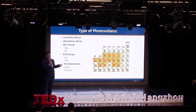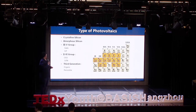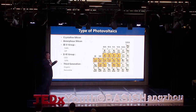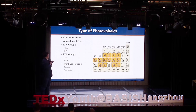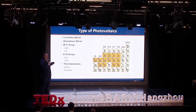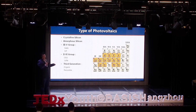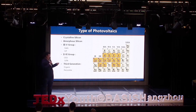What kind of materials can make photovoltaics? Traditionally, silicon — crystalline silicon and molten silicon — are the first generation. Then people started to find new groups, like group III-V and group II-VI materials. And then the third generation, which I'm working on, is organic and perovskite photovoltaics.